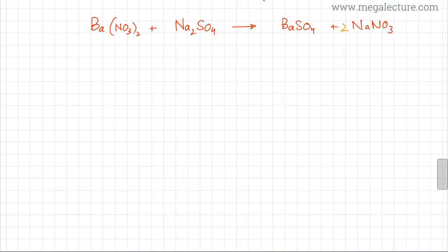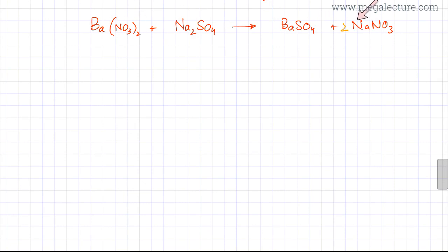In this question we're going to write an ionic equation for the reaction of barium nitrate reacting with sodium sulfate, producing barium sulfate and sodium nitrate. This is an example of ionic precipitation, but the equation is already given.